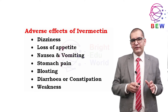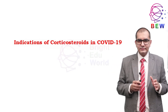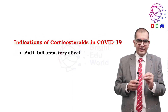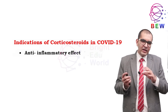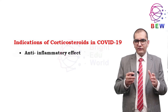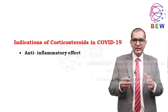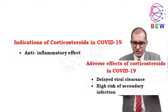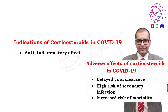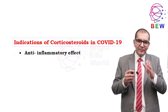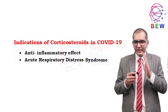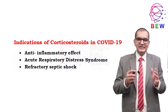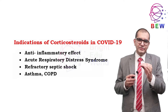The next class is corticosteroids. Although corticosteroids are often used for their anti-inflammatory effects in patients with respiratory infections, several studies have indicated that corticosteroid use in COVID-19 patients is associated with delayed viral clearance, higher risk of secondary infection, and increased risk of mortality. Still, corticosteroids may be indicated in patients who develop ARDS or refractory septic shock, and those with underlying respiratory conditions such as asthma or COPD.